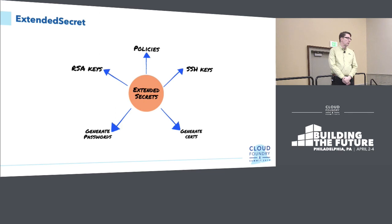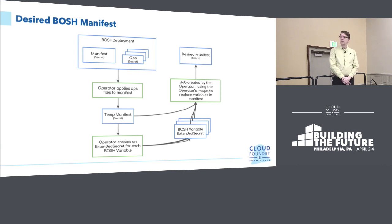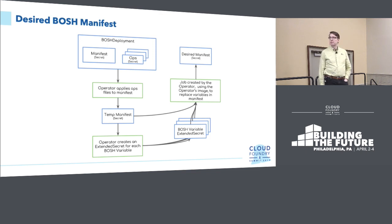The last custom resource is the Extended Secret — a customized resource definition that generates passwords, certificates, and SSH keys, depending on what type of secrets you define in your BOSH manifest. This diagram illustrates what happens with the CF operator logic when you define a manifest and ops files. In a nutshell, the operator applies the ops file on top of the manifest, stores it in a secret, gets all the variables and stores them in Extended Secrets, then takes that stored rendered manifest and applies all the variables from Extended Secrets so that at the end you finish with the desired manifest.